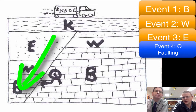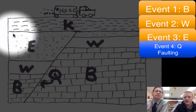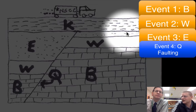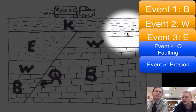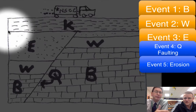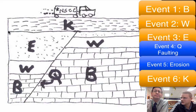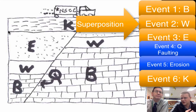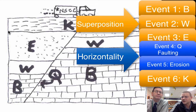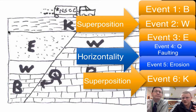The layers are not perfectly flat next to each other, so there must have been some weathering and erosion that broke down the rock and pushed those upper layers away. The wiggly line where you have the arrow is an indicator of erosion or weathering in cross sections like this. Then the youngest event would be layer K because it's on top. So the order is: oldest — B, followed by W, E, then Q which is the fault following the horizontality principle, then erosion, and finally layer K as the youngest.